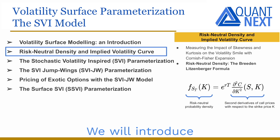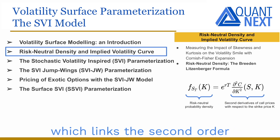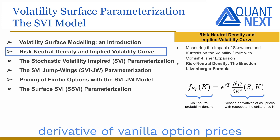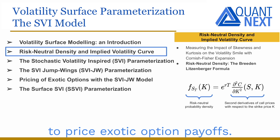We will introduce the Breeden-Nitzenberger formula, which links the second-order derivative of vanilla option prices with the risk-neutral density function, and can be very useful to price exotic option payoffs.